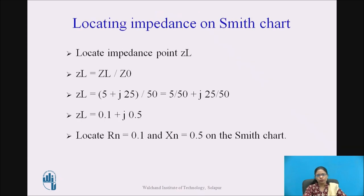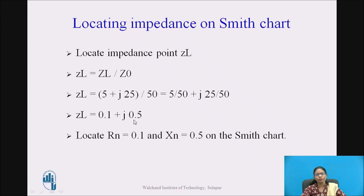Locating impedance on the Smith chart. To locate the impedance on the Smith chart, we work with normalized impedances. First, find the normalized load impedance zL by dividing the actual load impedance ZL by Z0. Assuming the actual load impedance is 5 plus J25 and Z0 is 50 ohm, dividing gives us a normalized impedance zL of 0.1 plus J0.5. To locate it on the Smith chart, take Rn as 0.1 and Xn as 0.5 and locate the coinciding point on the chart.